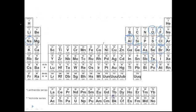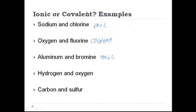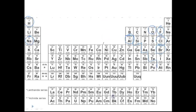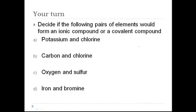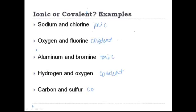Hydrogen and oxygen — this one is a little tricky. Hydrogen is way over on the left, but you know that hydrogen is actually a nonmetal. Oxygen is over on the right-hand side, also a nonmetal. So hydrogen and oxygen will make a covalent bond. And last one: carbon and sulfur. Carbon is over in group 14 and sulfur is also a nonmetal. So they're going to share some pairs of electrons and make a covalent bond.